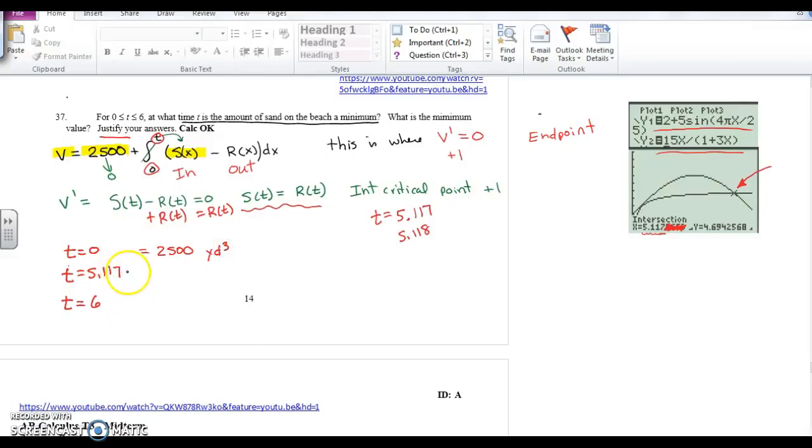When you plug in 5.117 or 5.118, you're plugging into this on your calculator. Here's my setup. I already had y2 and y1 in my calculator, so it was quick to do this integral from 0 to 5.117.